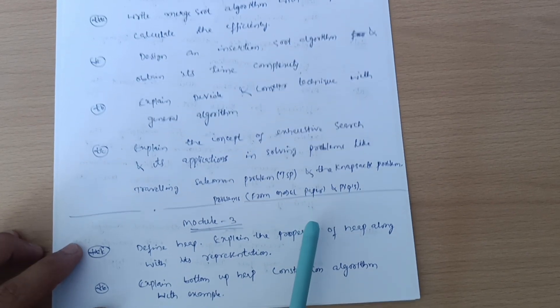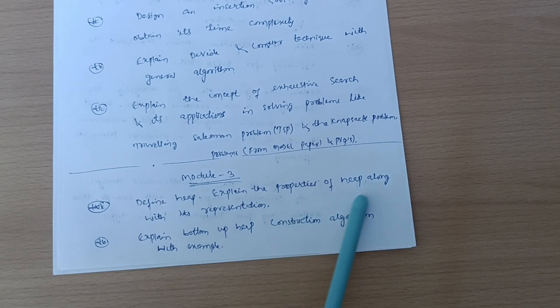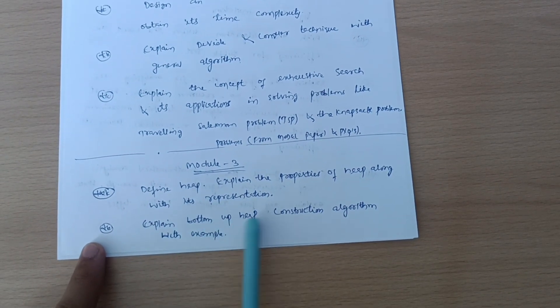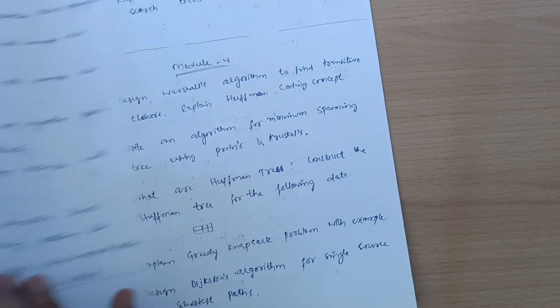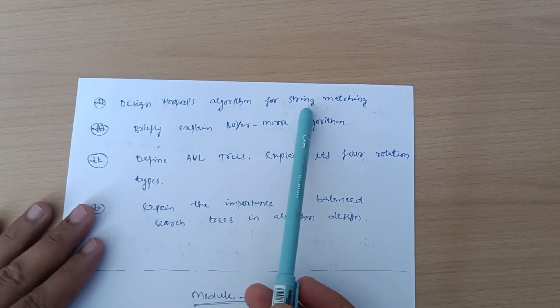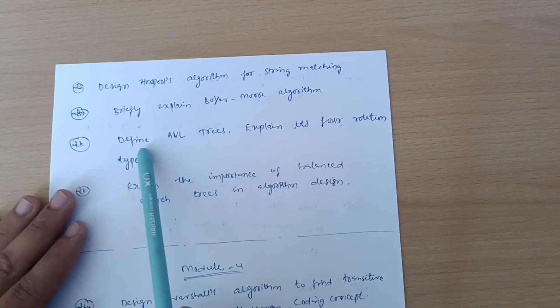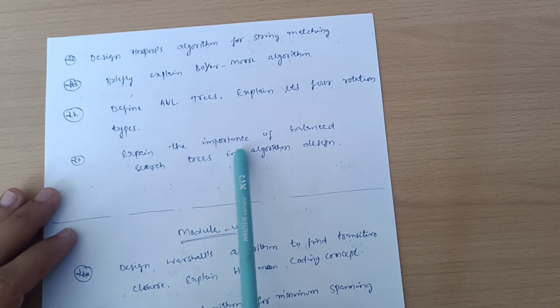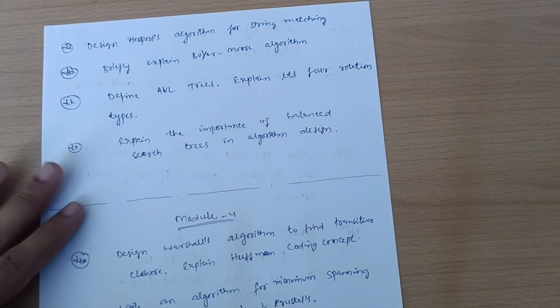Next is Module 3: Define heap and explain the properties of heap along with its representation. Explain bottom-up heap construction algorithm with example, this is super important. Next, design Horspool's algorithm for string matching, briefly explain Boyer-Moore algorithm, and define AVL trees and explain its four rotation types. Explain the importance of balanced search trees in algorithm design.